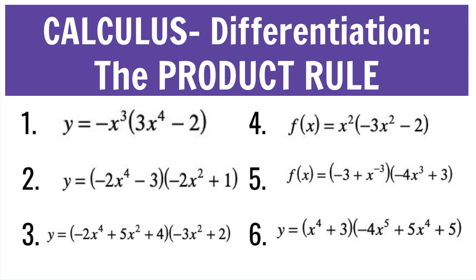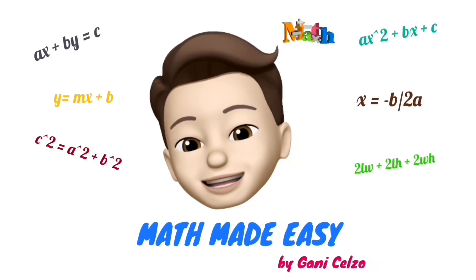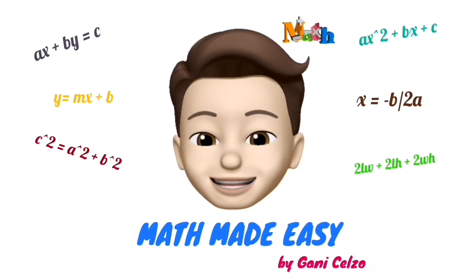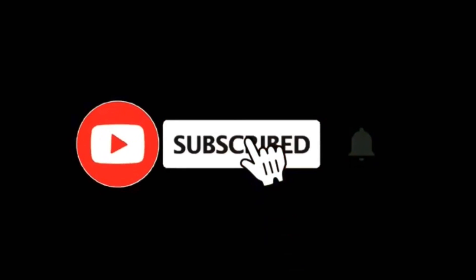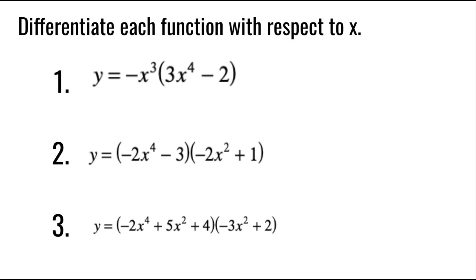Today, we're learning how to find the derivatives using the product rule. Using the product rule, the derivative d over dx of f(x) times g(x) is equal to f prime of x times g(x) plus f(x) times g prime of x. Here are the first three examples.